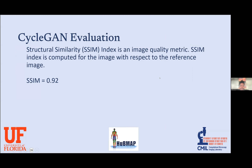CycleGAN is evaluated using SSIM — the Structural Similarity Index — which measures how similar two images are to each other. In this case it measured how similar the original image is to the synthesized image, and our score was 0.92, which is really good.